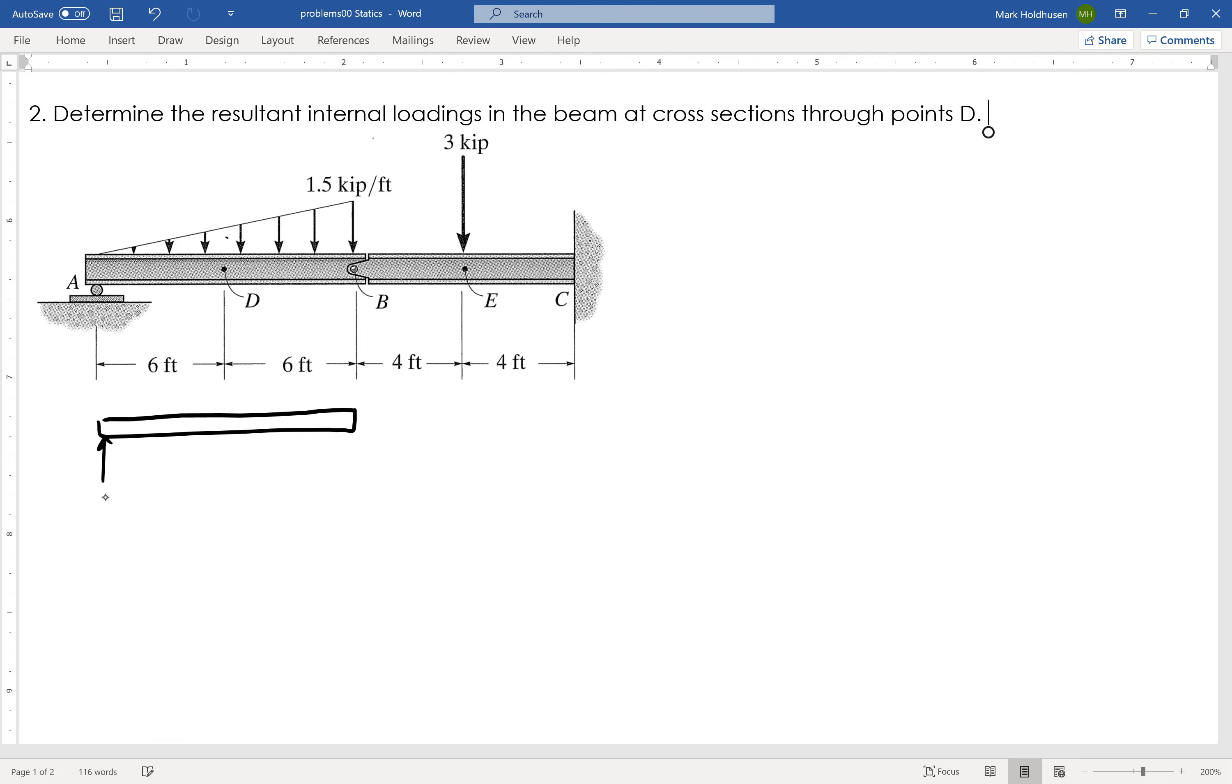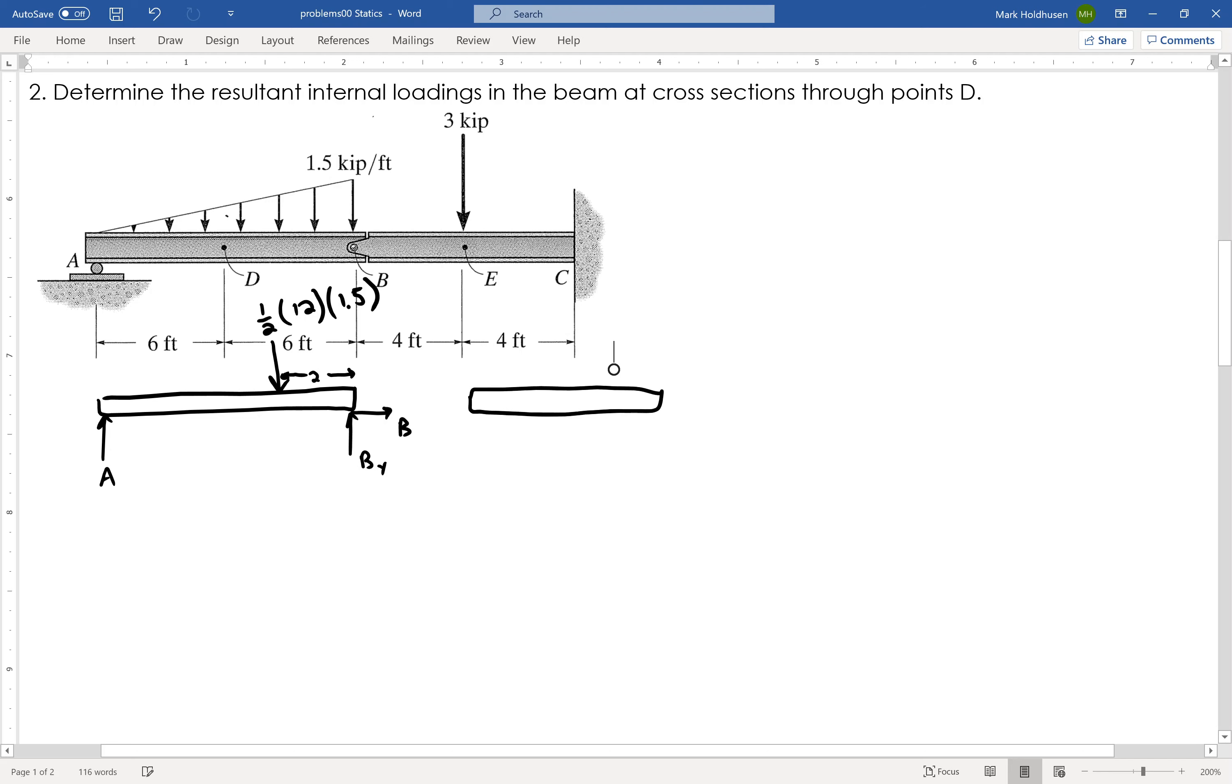So what I think I'll start by doing is drawing a free-body diagram where I've got A over here. I've got BX and BY over here. And then I can represent that distributed load as a point load, which will be 2 feet from the right side here, 1 third of the way over, and it's going to be 1 half 12 by 1.5 is the amount of that load.